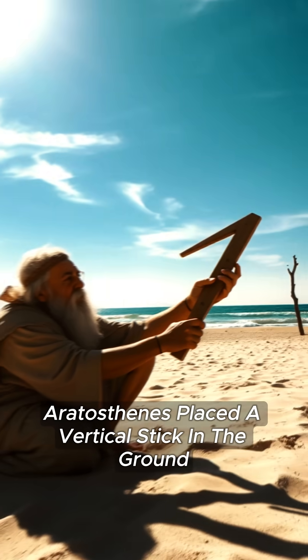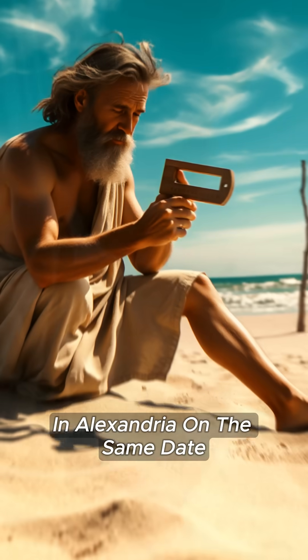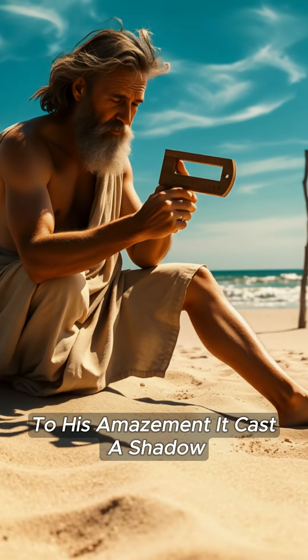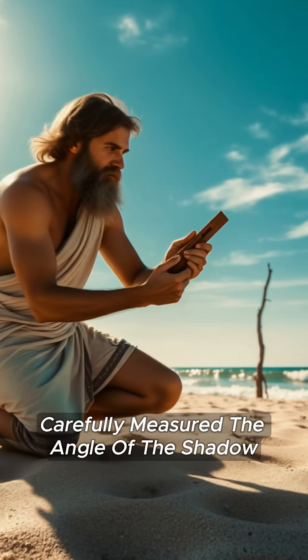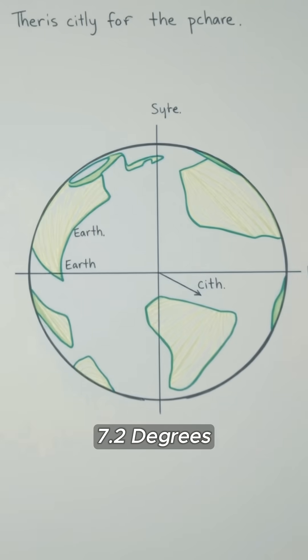What if Earth's surface curved? Eratosthenes placed a vertical stick in the ground in Alexandria on the same date. To his amazement, it cast a shadow. He carefully measured the angle of the shadow, 7.2 degrees.